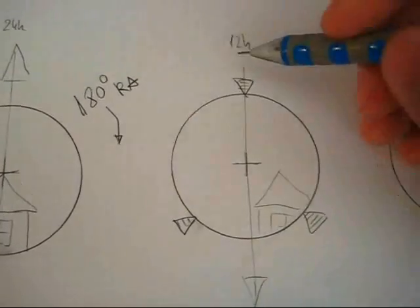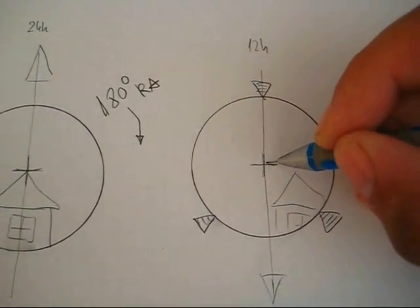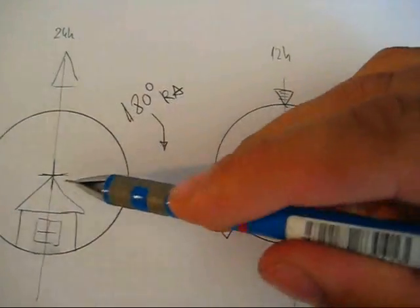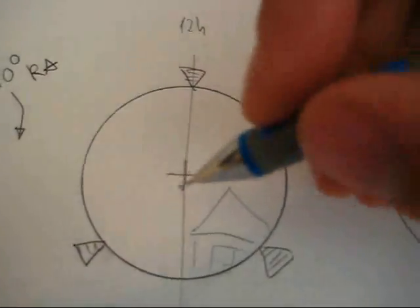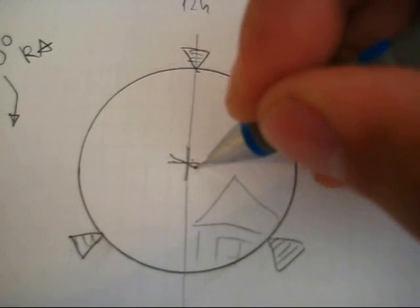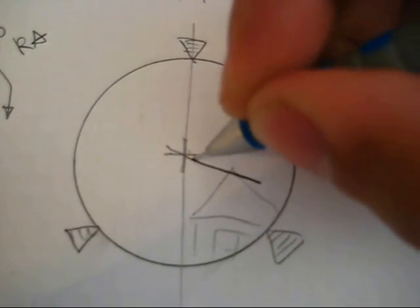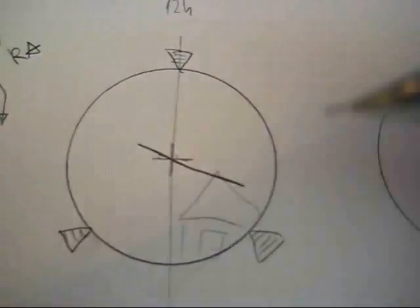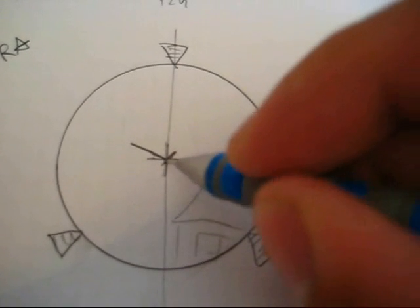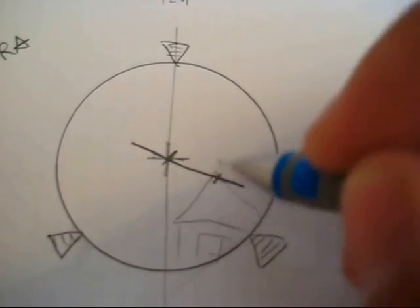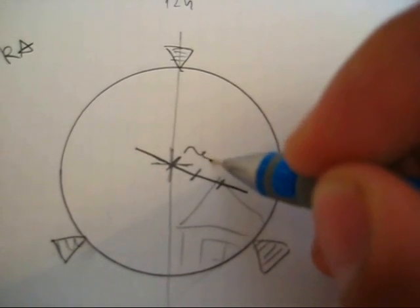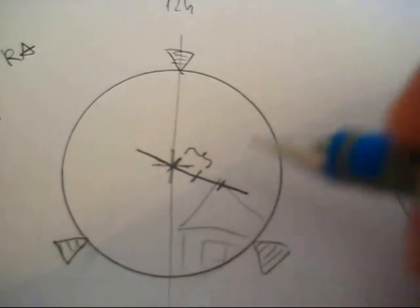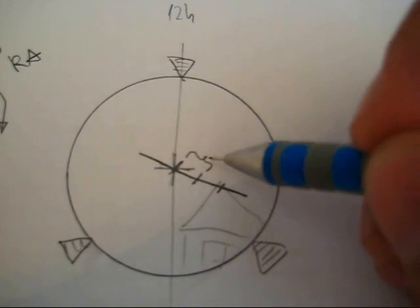Right now, you can observe that the object has moved away from the cross, indicating that the Polar Alignment Scope is not in the correct position. Mark the distance and the direction of this movement, and divide this distance into two sections.